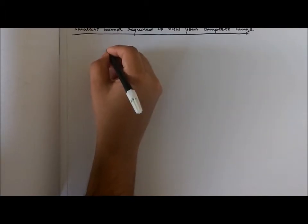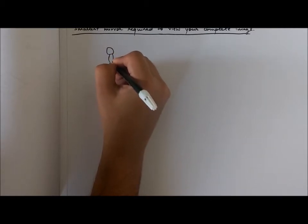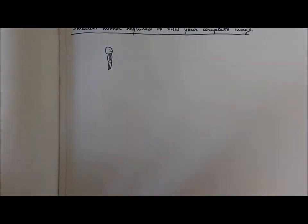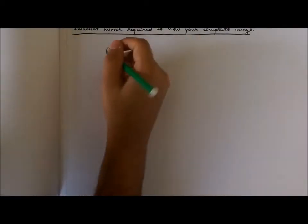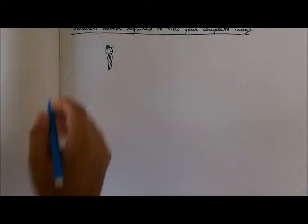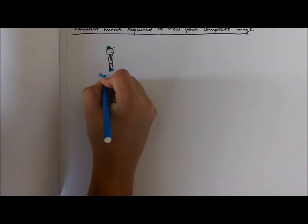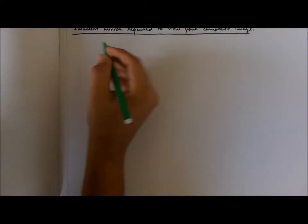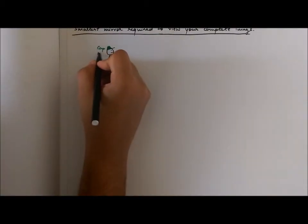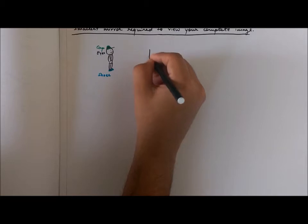Let me draw myself — this is me right here. To make it easier to understand, I'm going to add a cap and some shoes. So these are my shoes, this is my cap, and my eyes are somewhere here. Now let's assume I'm standing in front of a plane mirror.